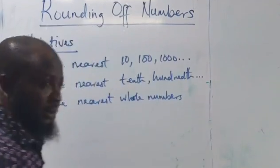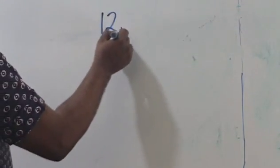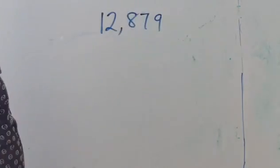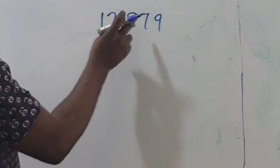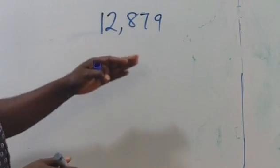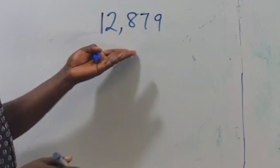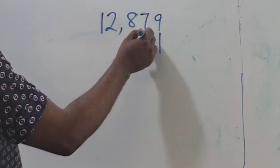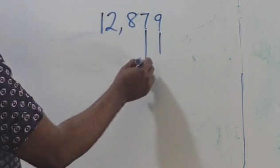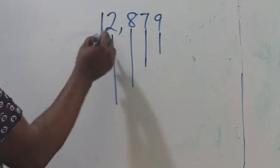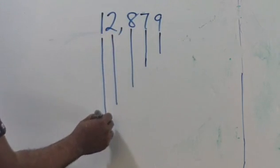Now, if you have any number — say you have 4,879 — this is a number that's made up of digits 4, 8, 7, and 9. Each digit has a value, or a place value in the number. This one has its own value, this also has its own value, this also has its own value, while this has its own value.